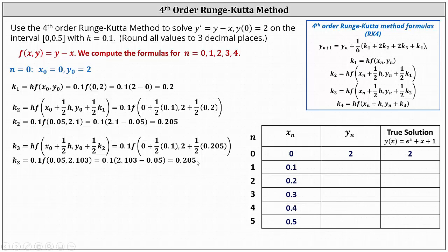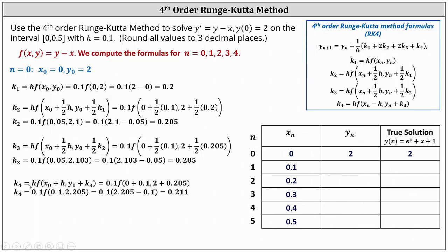Finally, we determine k sub 4, where k sub 4 is equal to h times f of x sub 0 plus h comma y sub 0 plus k sub 3, where h is 0.1, x sub 0 is 0, y sub 0 is 2, and k sub 3 is 0.205. Simplifying, we have 0.1 times f of 0.1 comma 2.205, which equals 0.1 times the difference of 2.205 and 0.1, giving us 0.211.